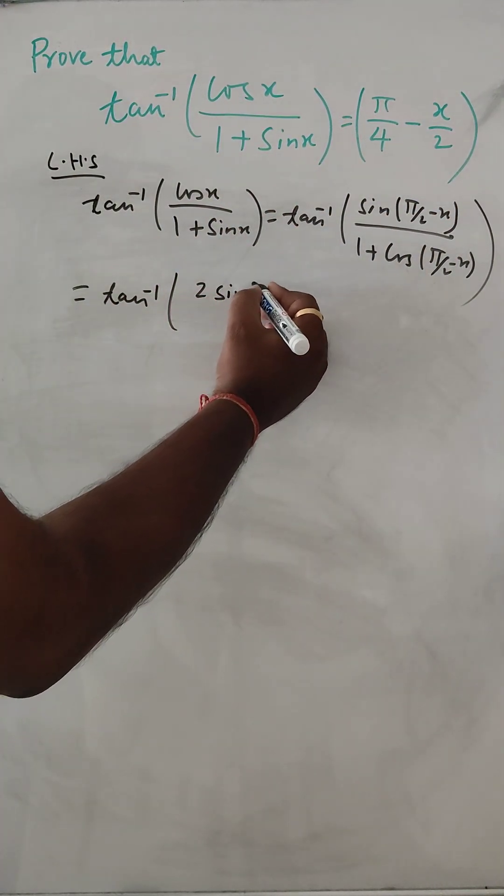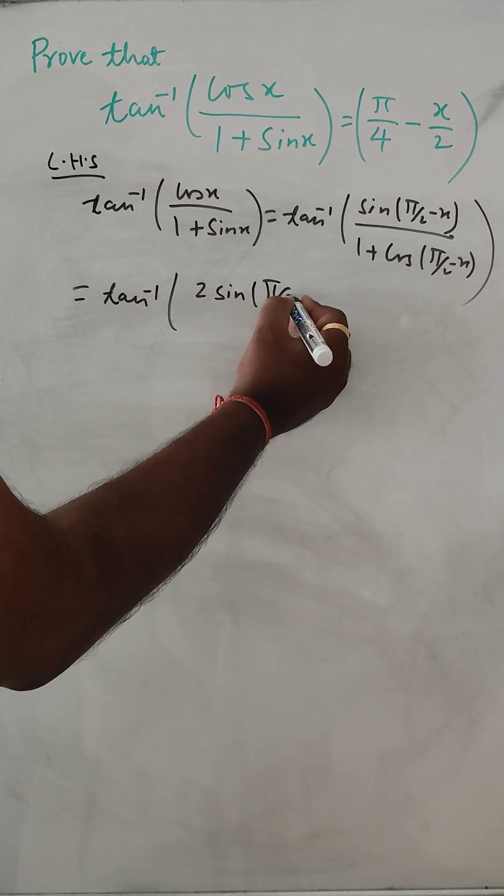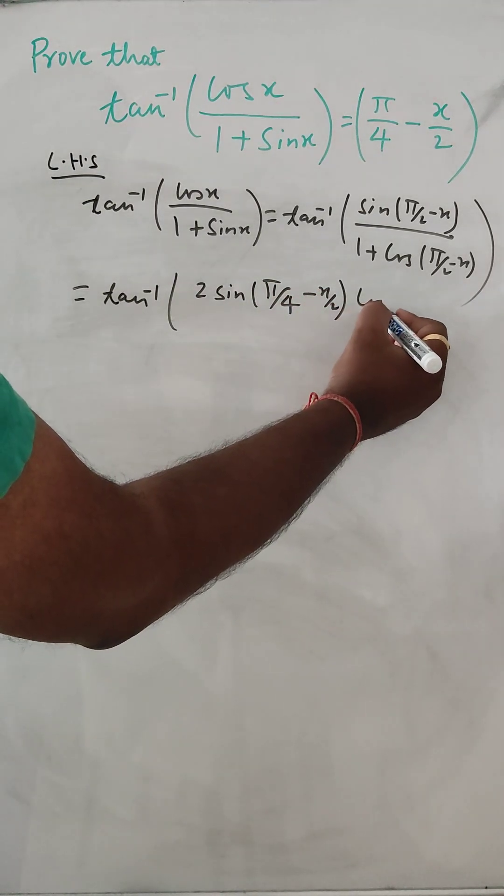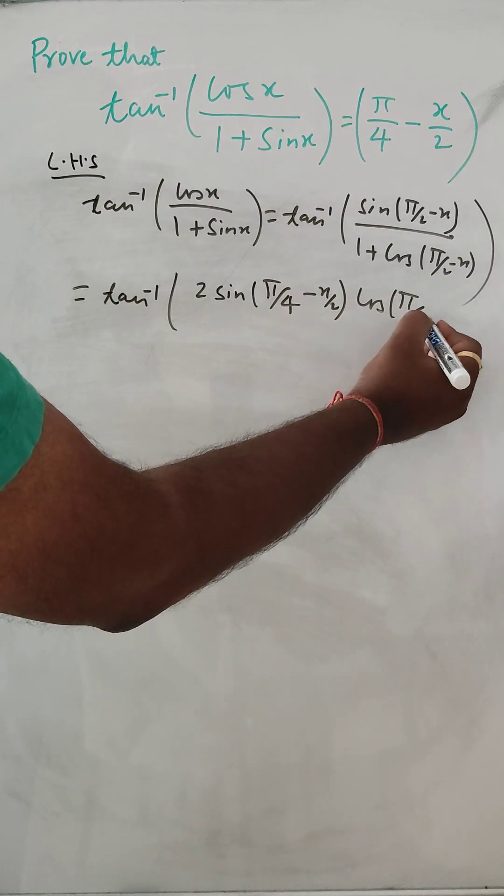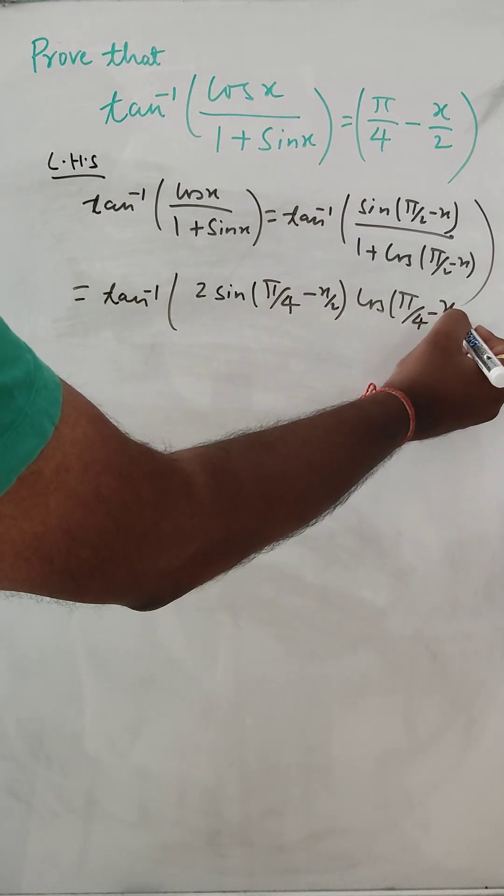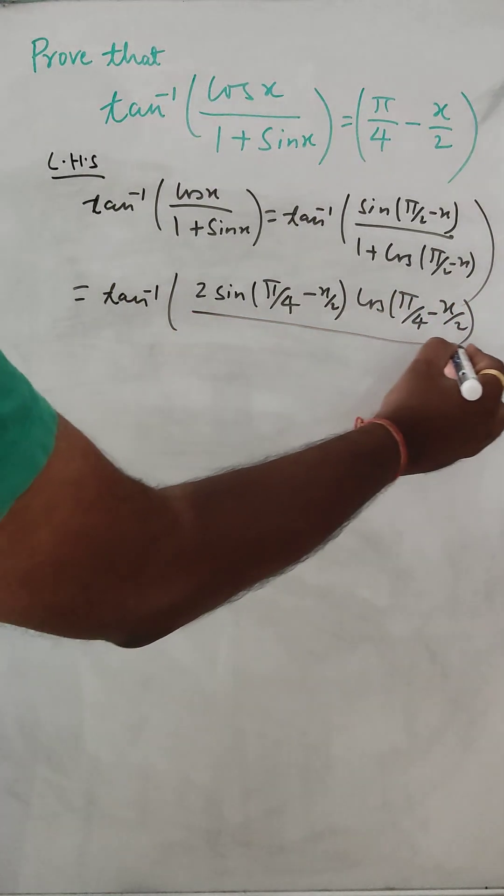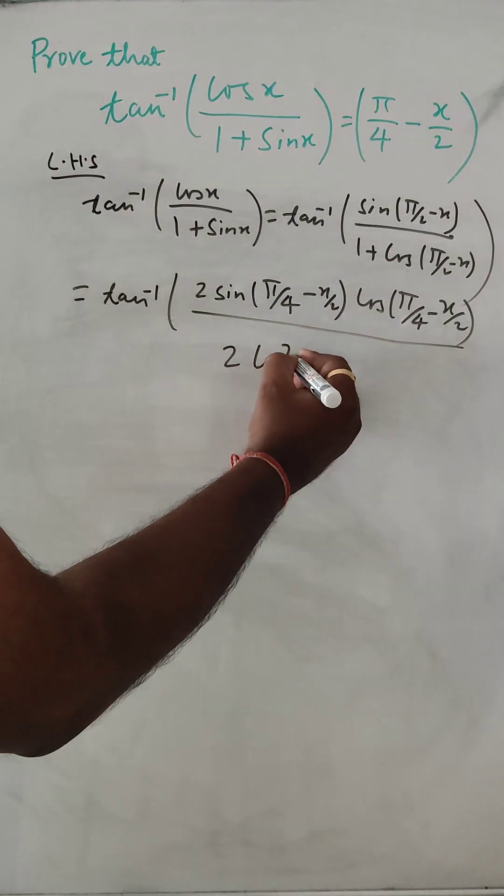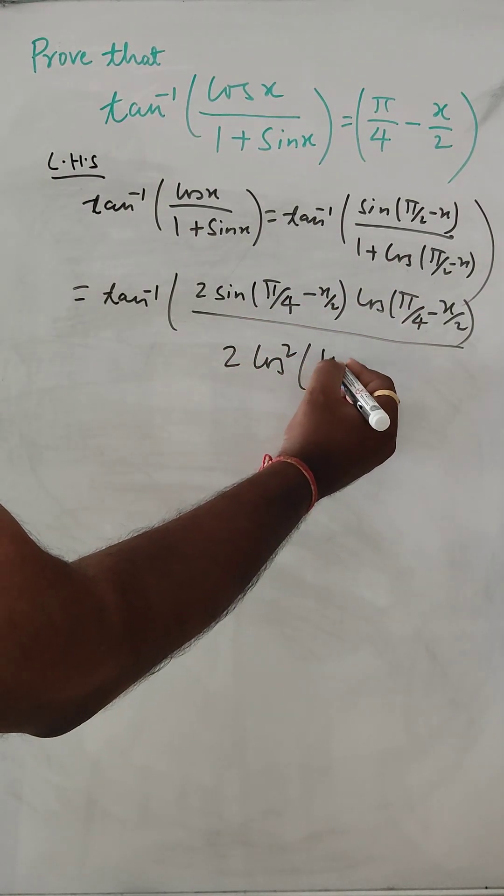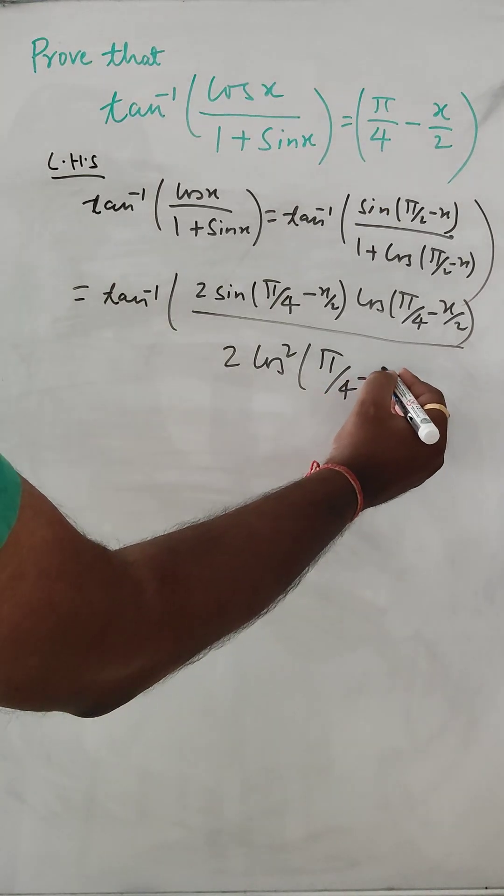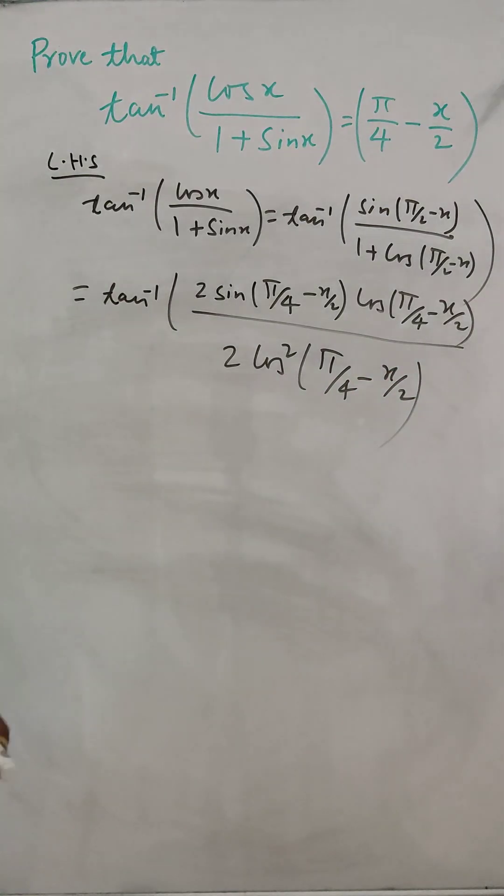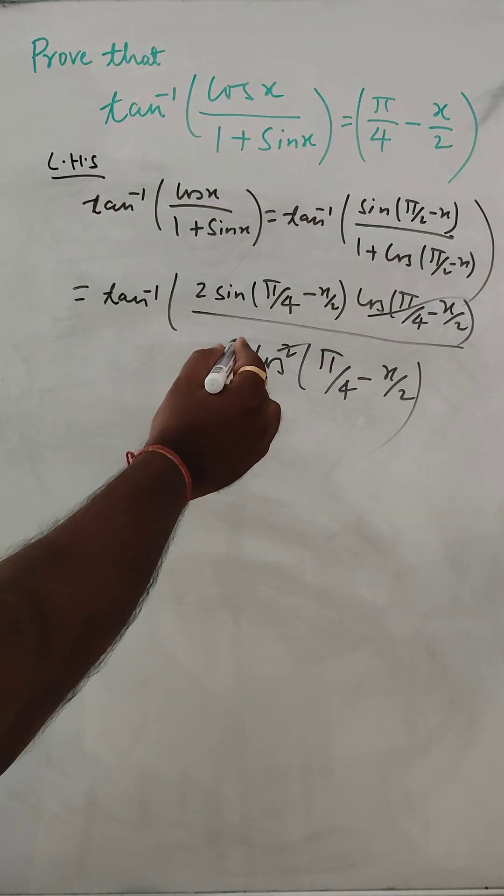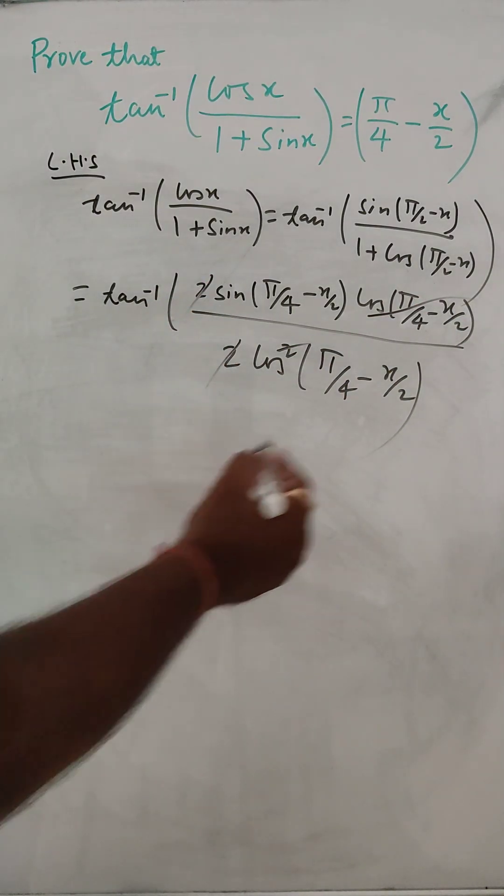Means 2 sin pi by 4 minus x by 2, here cos pi by 4 minus x by 2. And then this one 2 cos square pi by 4 minus x by 2. This and this got cancel and this 2, this 2 got cancel.